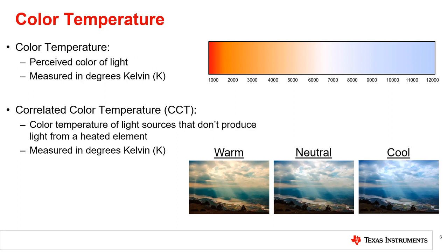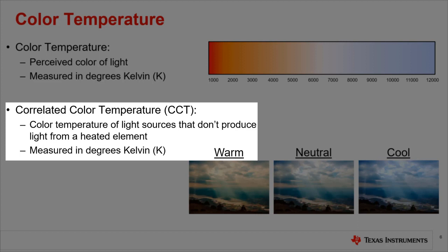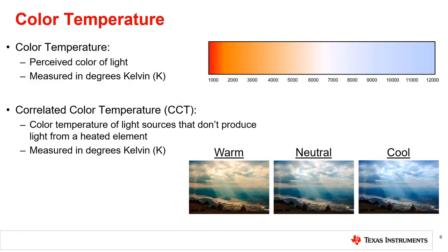For light sources that don't produce light from a heated element, their color temperature can be characterized as correlated color temperature, or CCT, which is also measured in Kelvin. For the purposes of light sensors, CCT is what is referenced when it comes to how warm, cool, or neutral a light appears.